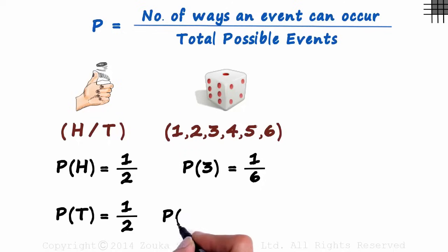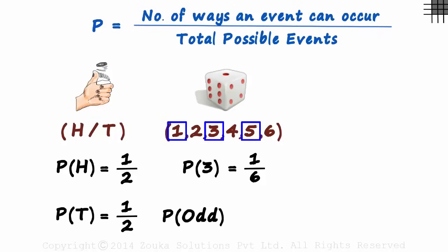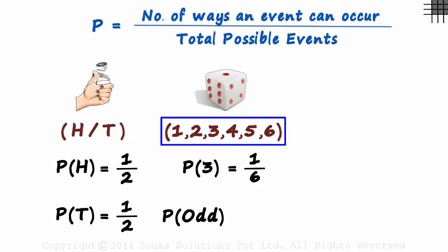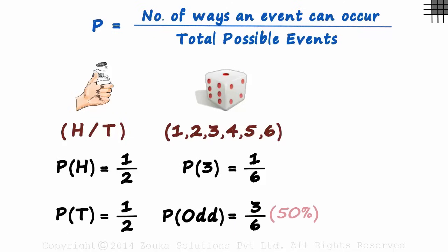What would be the probability of getting an odd number at the throw of a fair die? There are three ways in which we can get an odd number, and there are a total of six possibilities. So the probability of getting an odd number at the throw of a fair die is three over six, or fifty percent.